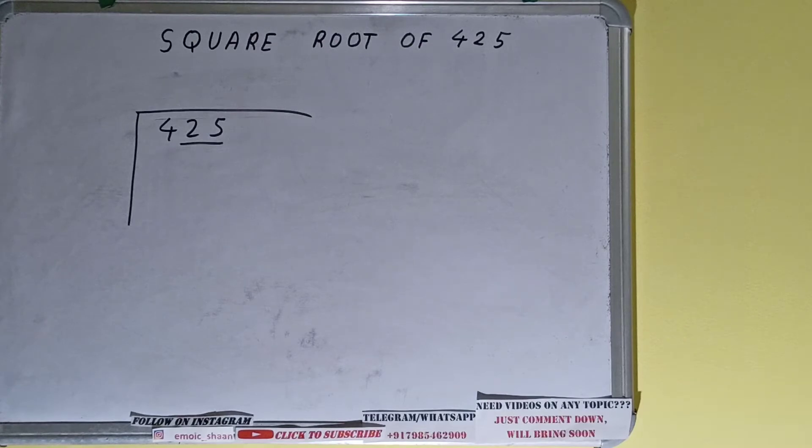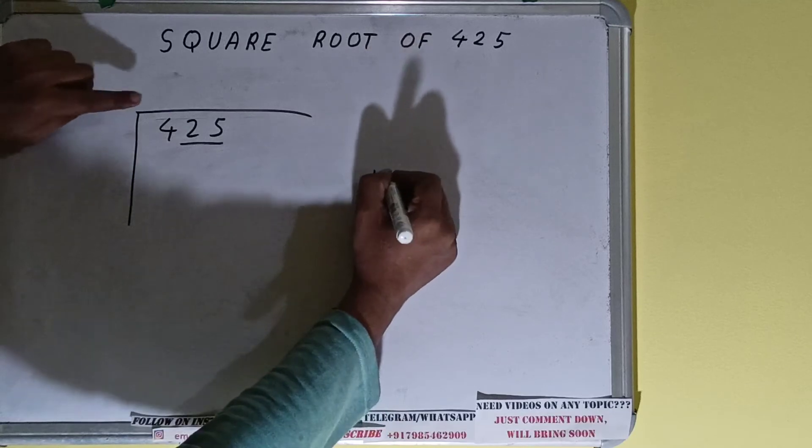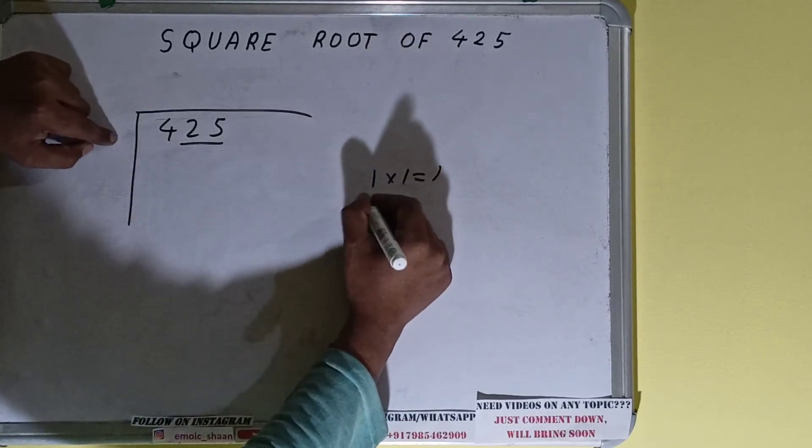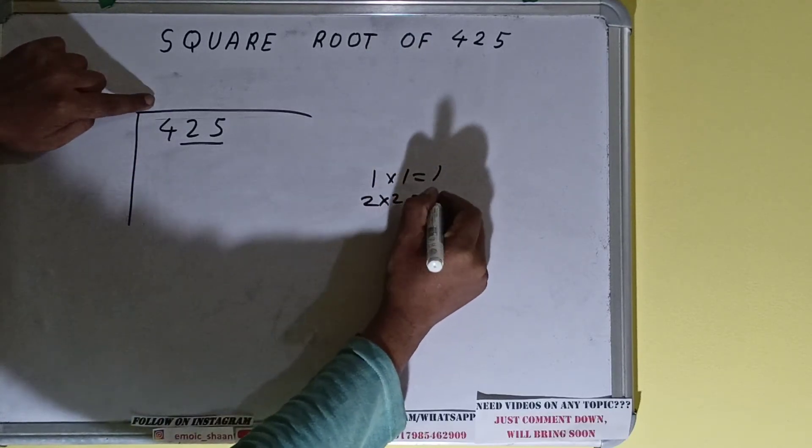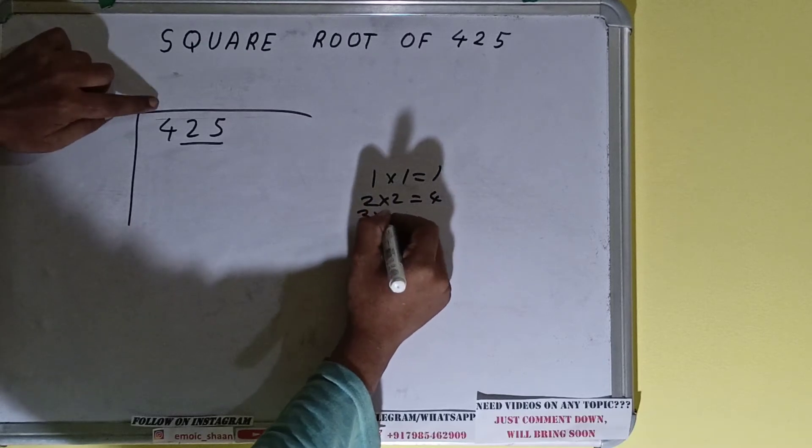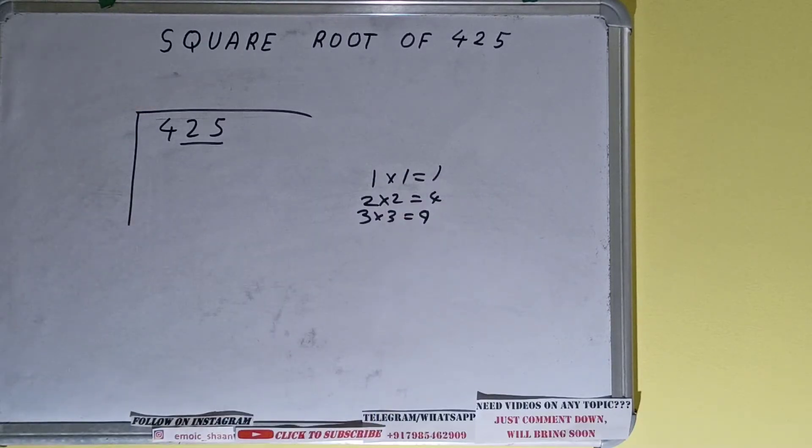The rule is whatever number we write here, we have to write here also. If we write 1 here and 1 here it will give 1. If we write 2 here and 2 here it will give 4. If we write 3 here and 3 here it will give 9, so we cannot take 9 because it is greater than 4.